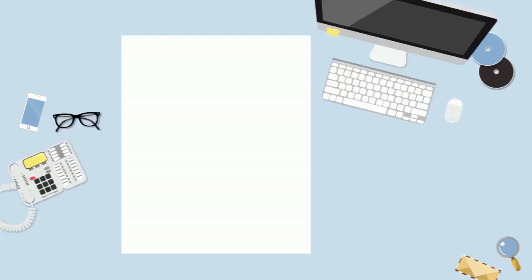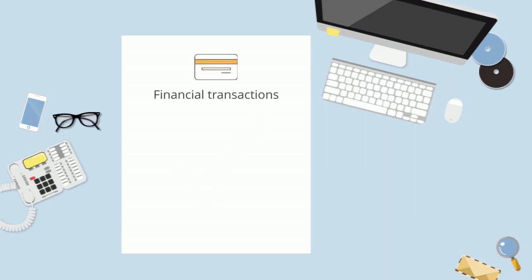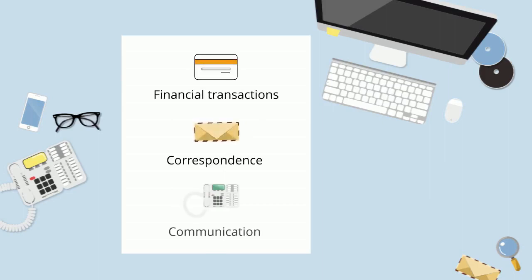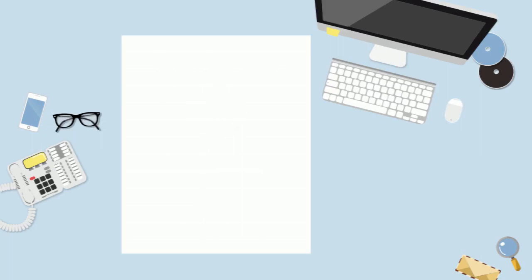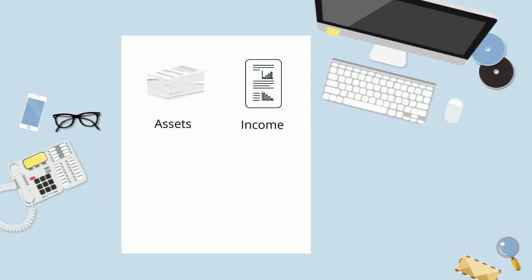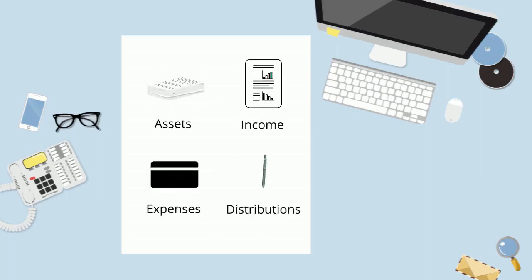Throughout the entire process, maintaining accurate records is crucial. I keep track of all financial transactions, correspondence, and communications related to the estate. This record-keeping ensures transparency and may be required when providing an accounting of the estate's assets, income, expenses, and distributions to beneficiaries or the court.